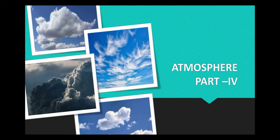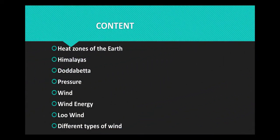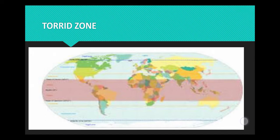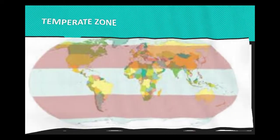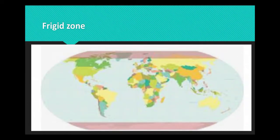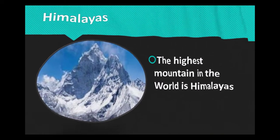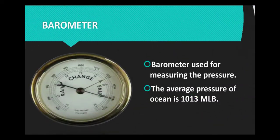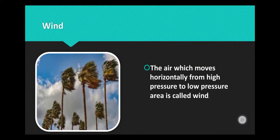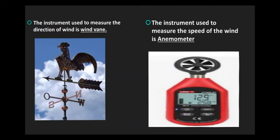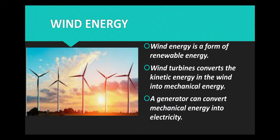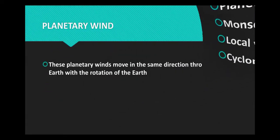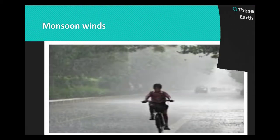What are the topics you saw in the last class? Heat zones of the earth: torrid zone, temperate zone, frigid zone. Himalayas, isobar, pressure, barometer, wind, wind energy, and different types of wind — planetary wind, monsoon winds.